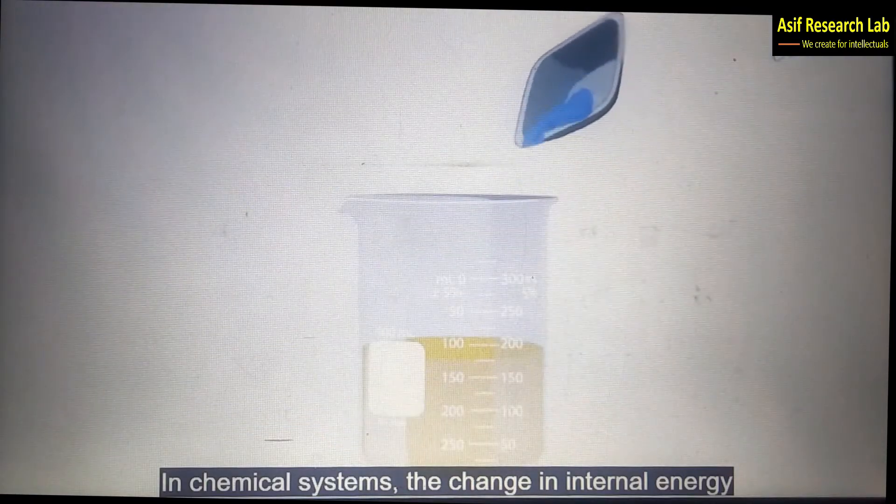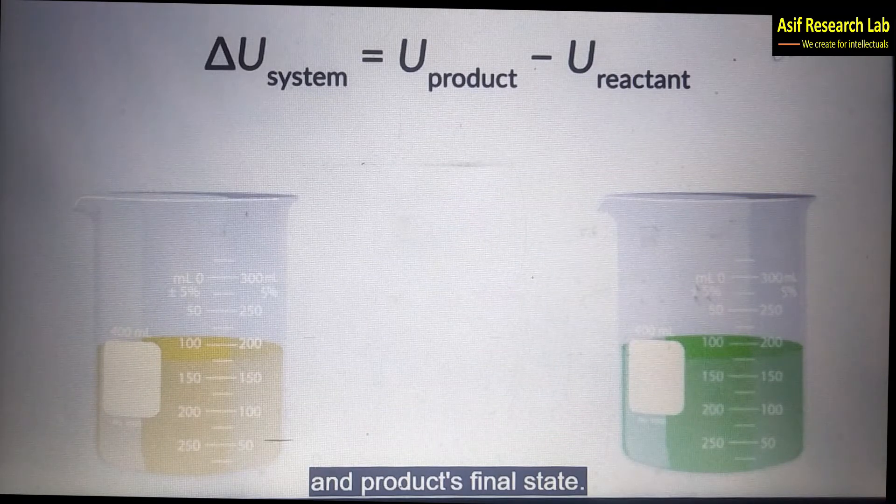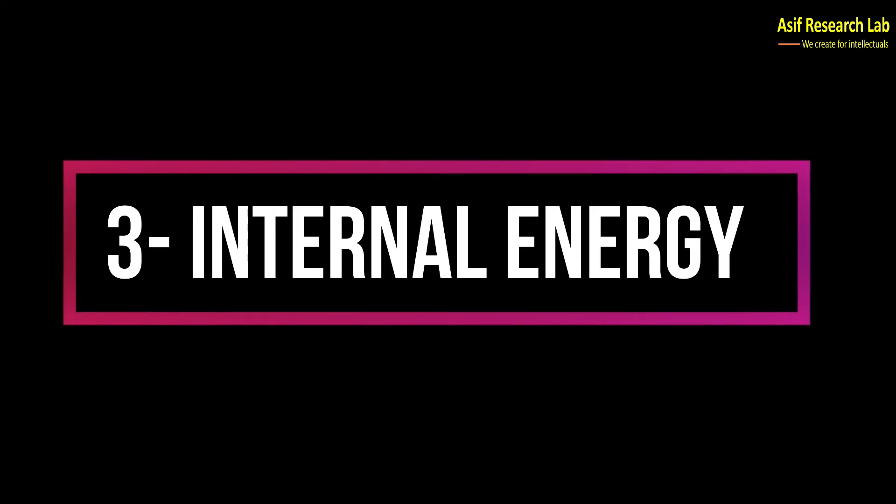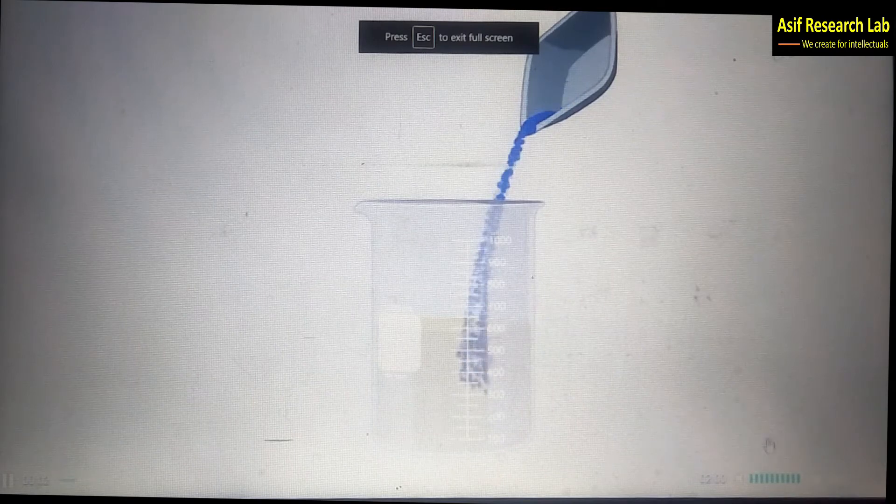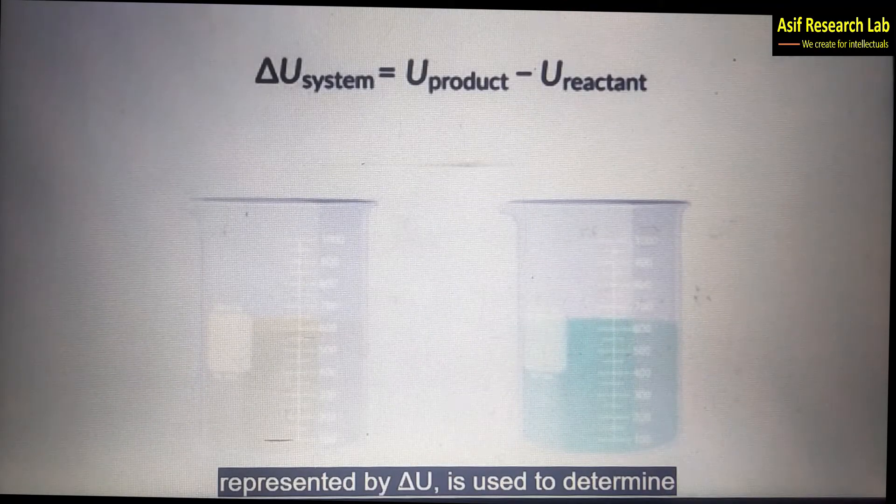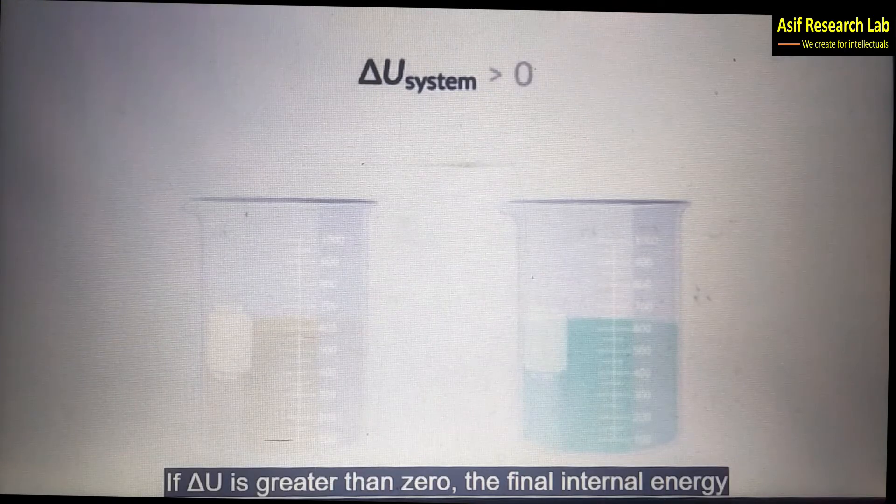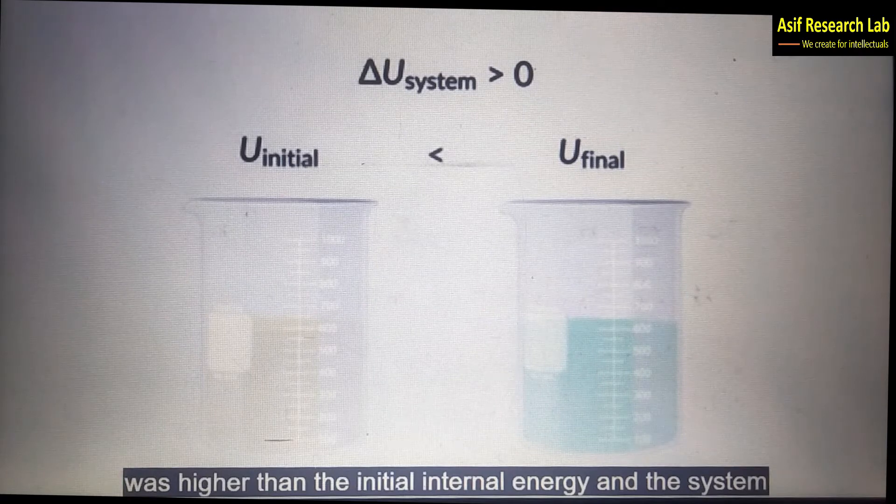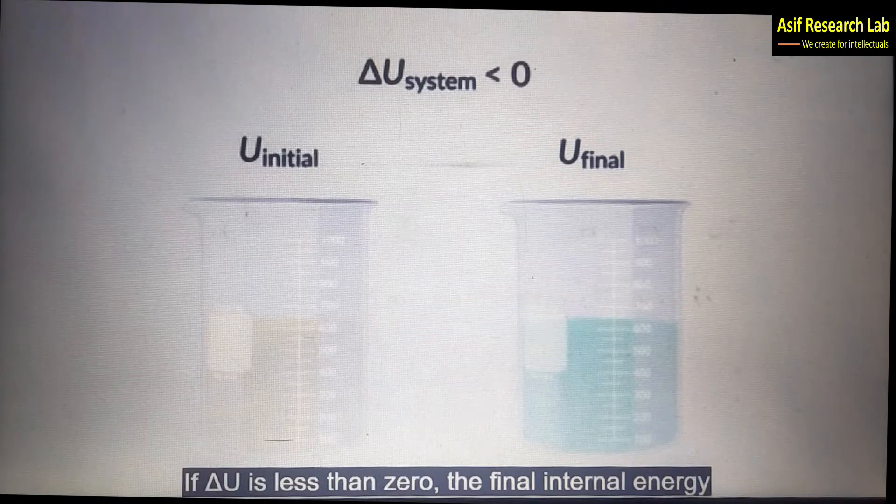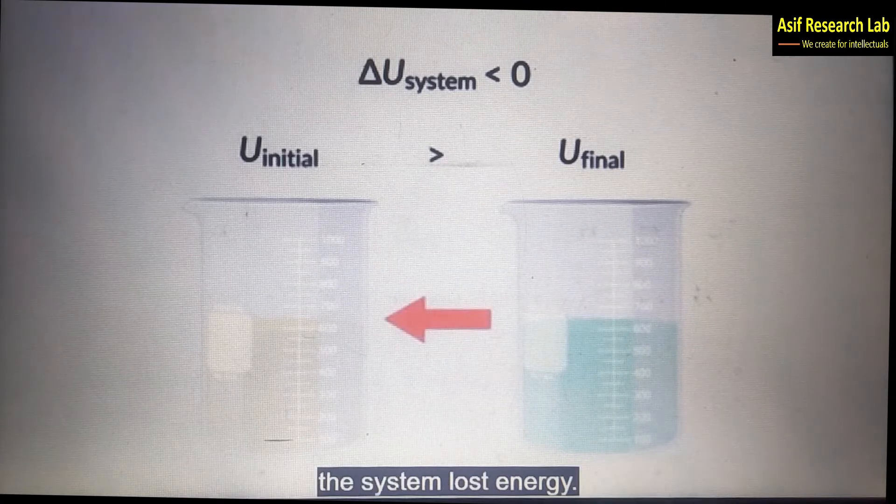In a chemical system the change in the internal energy is described by the difference of the reactant's initial state and the product's final state. It is used to understand the energy's flow of system. The change in relationship between the internal energy of the reactants and products is represented by delta U and is used to determine whether the system gained or lost energy during the reaction. If delta U is greater than zero the final internal energy was higher than the initial internal energy. If delta U is less than zero the internal energy is lower than the initial internal energy meaning the system lost energy.